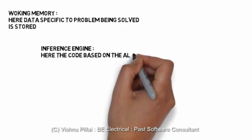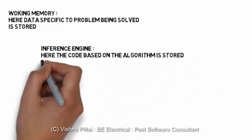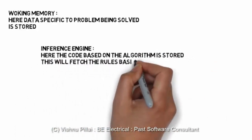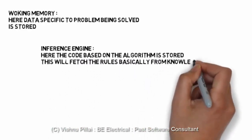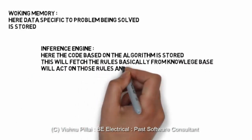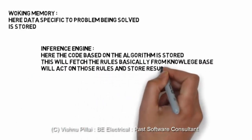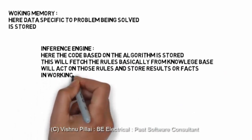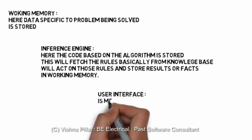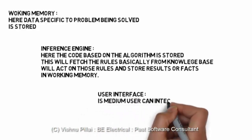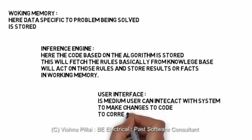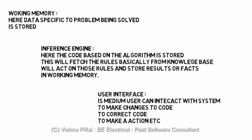The inference engine stores code based on the algorithm. When a user inputs a task to the expert system, the algorithm works to derive a solution. The inference engine fetches rules from the knowledge base, acts on those rules, and stores results or facts in the working memory.